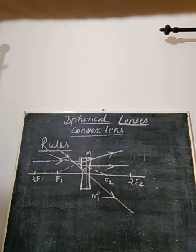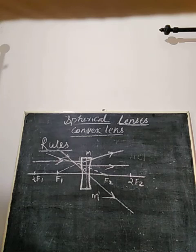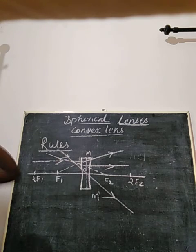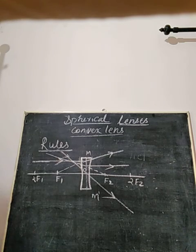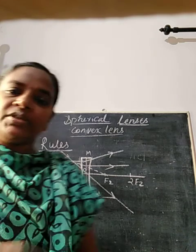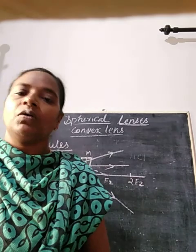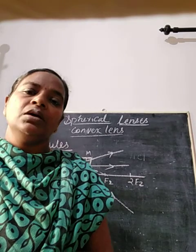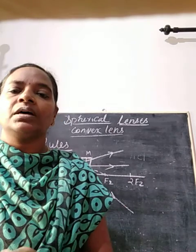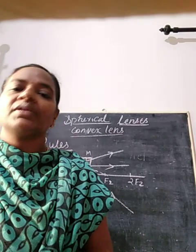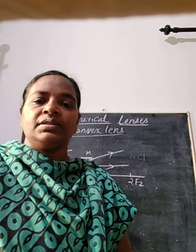These are the three rules of image formation by a concave lens. With this, we have completed the rules of image formation by both convex lenses and concave lenses. In the coming video, we will start discussing different cases of a concave lens.